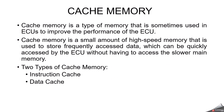Cache memory is a type of memory sometimes used in ECUs to improve performance. It is a small amount of high-speed memory used to store frequently accessed data, which can be quickly accessed by the ECU without having to access the slower main memory. Cache memory is used for program code execution, data storage and task scheduling. There are two types of cache memory: one is instruction cache and the other is data cache.